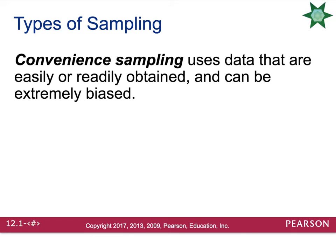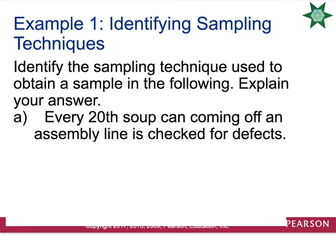Convenience sampling uses data that's just easy and ready to obtain, and it can be extremely biased. For example, I could stand outside of a college and ask students how they feel about Bernie Sanders' proposal for free community college for everyone. That's going to be extremely biased since most of the people walking into the college are paying for their own education. Let's look at a couple of examples and identify what type of sampling technique is being used.